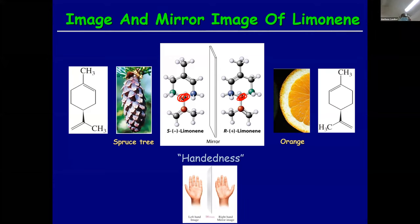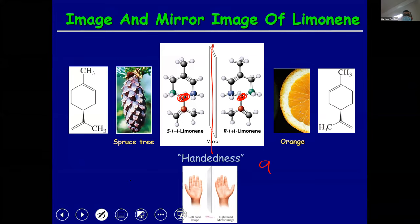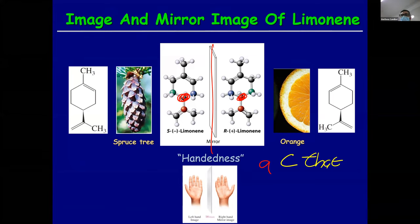They are mirror images of each other. Now, up to this level you just worked on how to find a chiral center. A chiral center is a carbon that has four different groups.